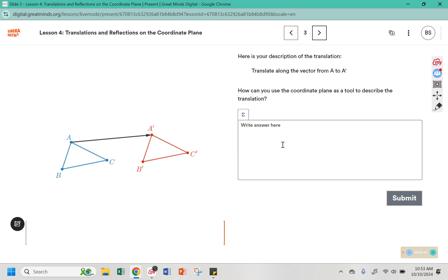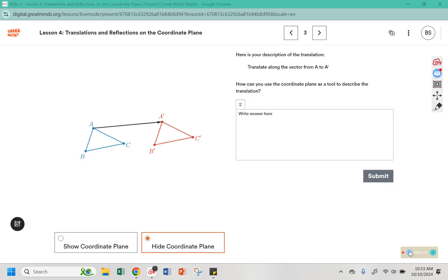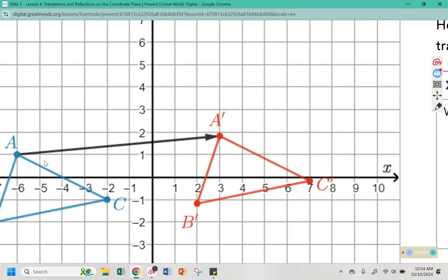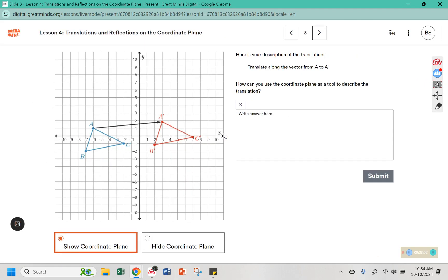How can you use a coordinate plane as a tool to describe the translation? If we click show coordinate plane, we can see here that it looks like it goes up one and over one, two, three, four, five, six, seven, eight, nine. It's not quite up a full unit, but it does look like it goes over exactly nine.